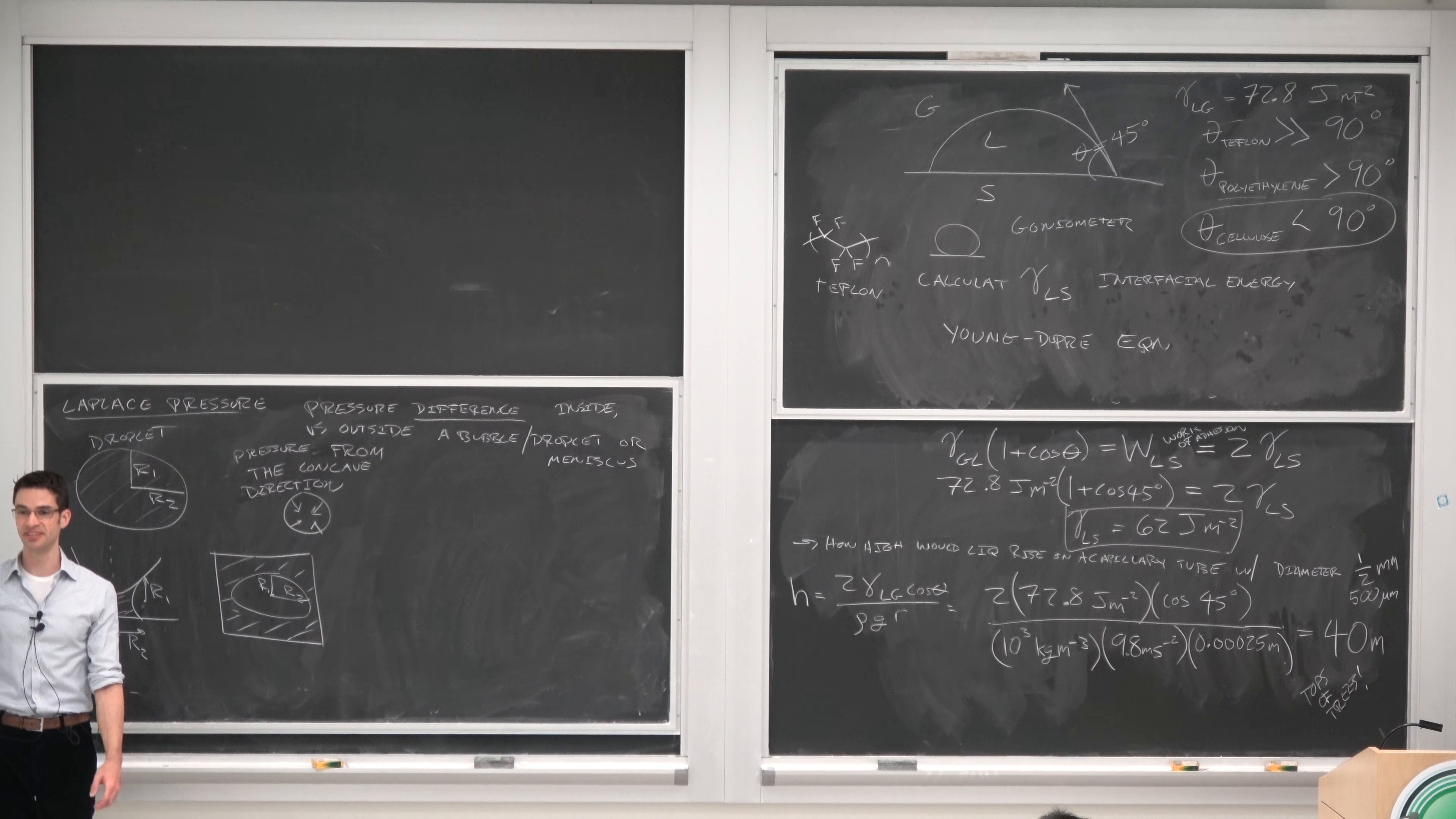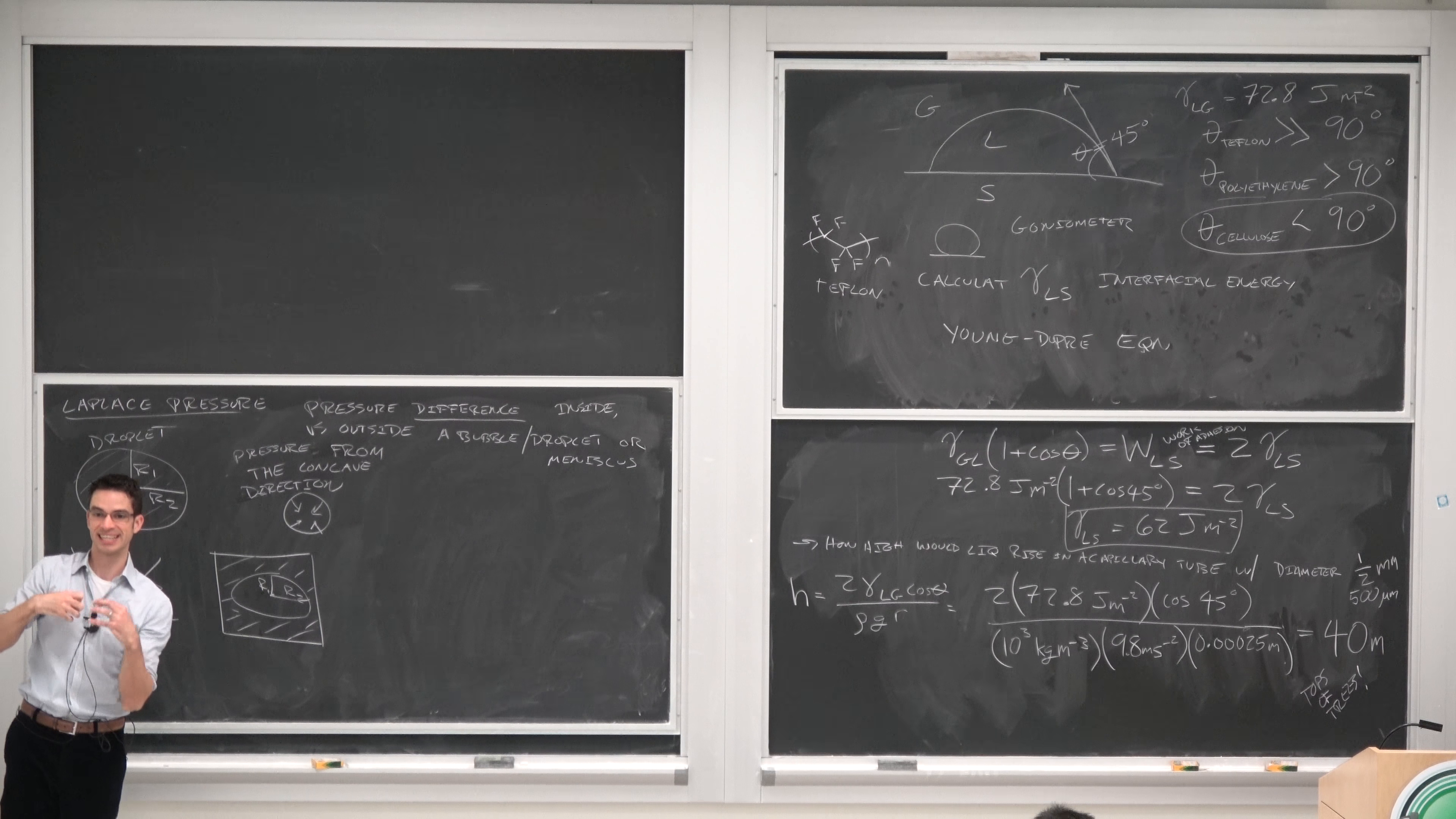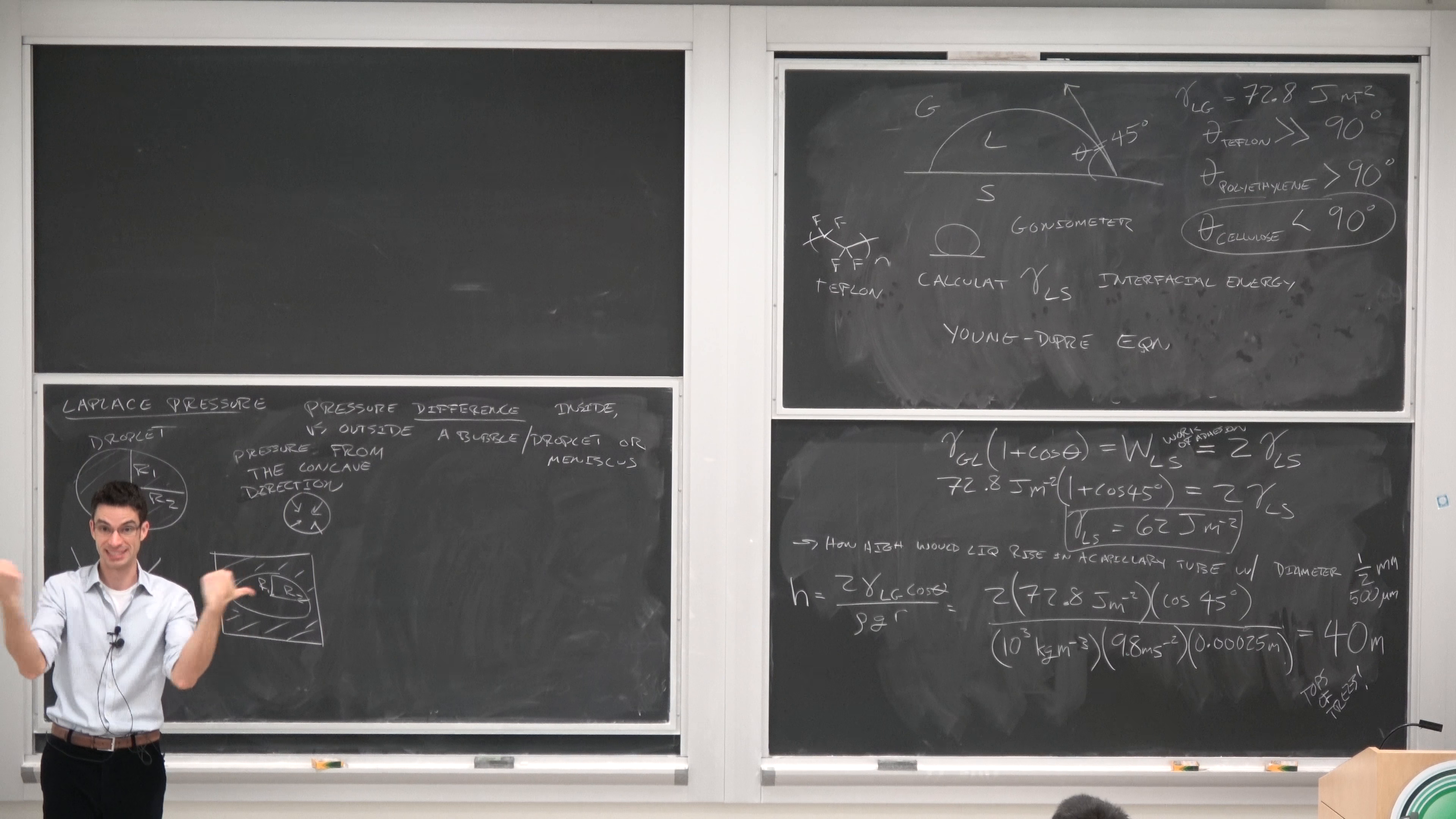What's more embarrassing, to admit you don't know how to spell something or to spell it wrong on YouTube? Pressure from the concave direction. So like for a sphere, the pressure would serve to squeeze it in like this, whereas in a meniscus, the pressure would want to push out this way.